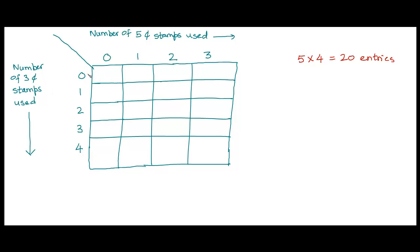If I used zero three-cent stamps and zero five-cent stamps, the total postage amount would be zero. If I used one five-cent stamp but no three-cent stamps, the total would be five cents; two gives ten cents; three gives fifteen cents. Along this row I'm only varying the number of five-cent stamps. Along the zero five-cent-stamp column, using one, two, three, or four three-cent stamps gives different postage amounts — I just multiply the count by three to get those values.